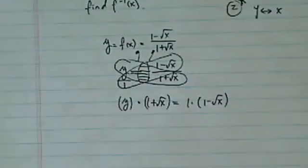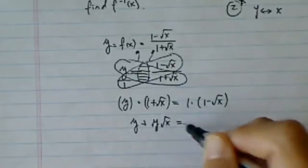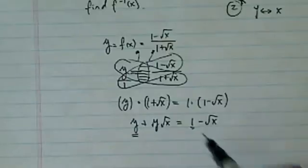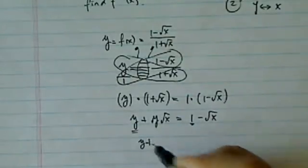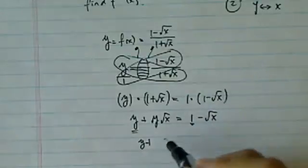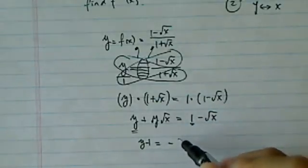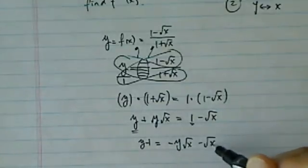And from here I'm gonna distribute. You know, y + y√x is equal to 1 - √x. I'm gonna gather the terms that do not have x to one side. So I have y - 1 is equal to -y√x - √x.